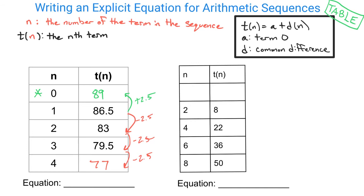And when you're writing your equation, then, t(n) is going to equal that a value, which is 89. And then since we are subtracting 2.5 each time, I'm going to say my common difference is negative 2.5. So we have negative 2.5 times n.